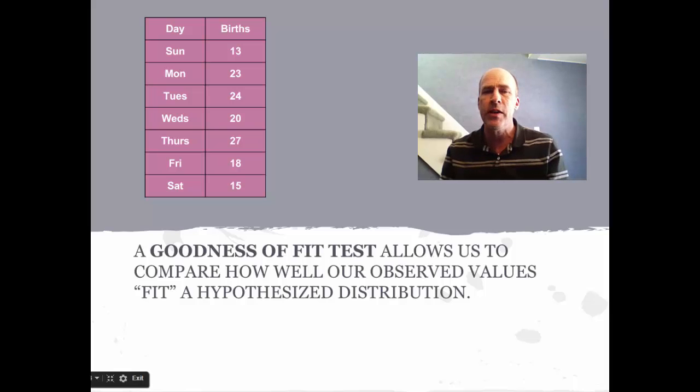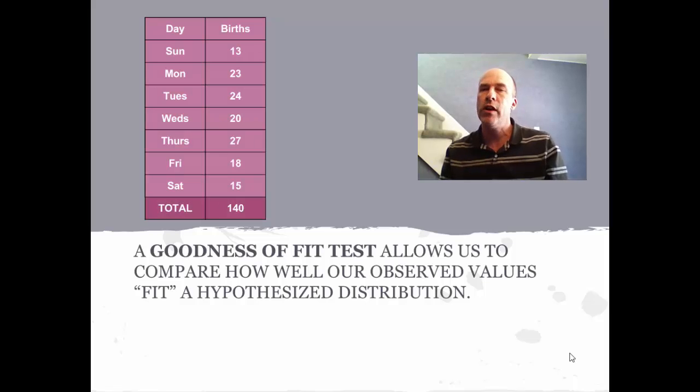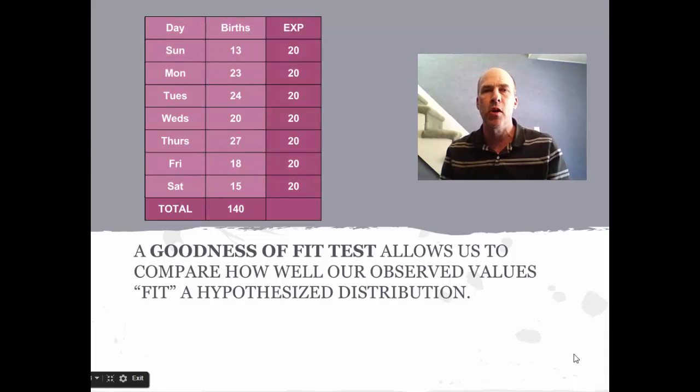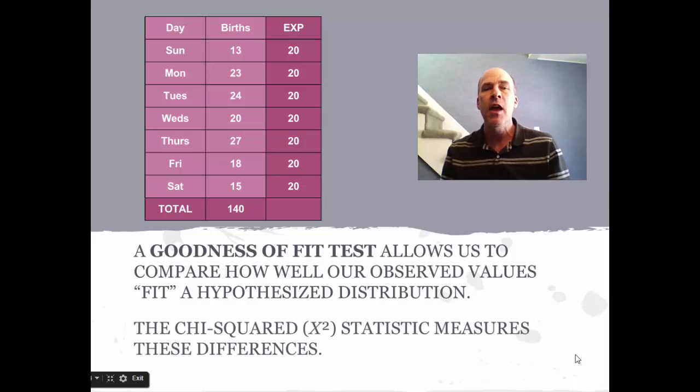We notice here there were 140 total days in the sample, which is very convenient because if we split that over the seven days, we would expect to see 20 births if all the days are equally likely. Certainly there's some variability here. Just how big is that variability? Is this enough to conclude that the dates are not equally likely for births?